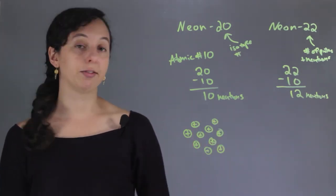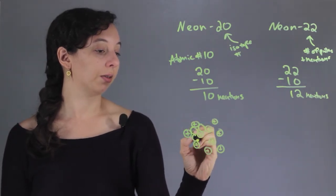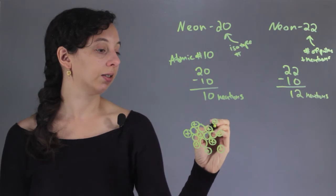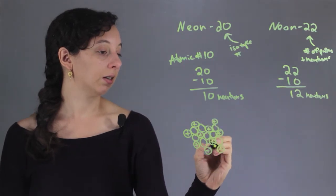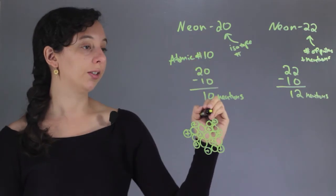And then it's also going to have 10 neutrons. So 1, 2, 3, 4, 5, 6, 7, 8, 9, 10. This is the nucleus of Neon-20.